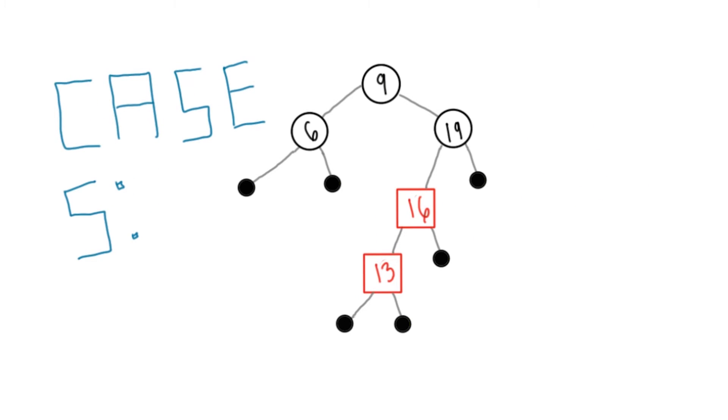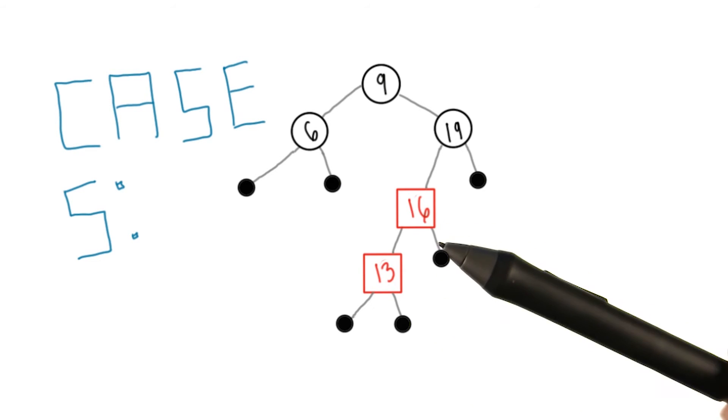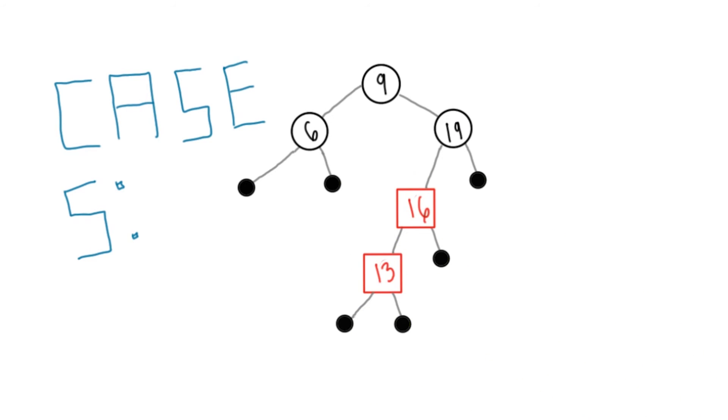At this point, we have a setup that looks exactly like case 5, where both the red node and its red parent are on the same side of their parents. Here that's the left.